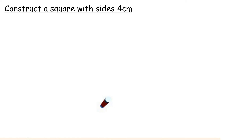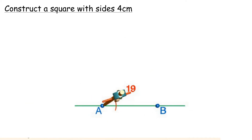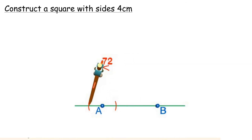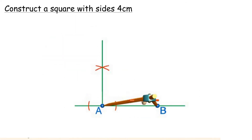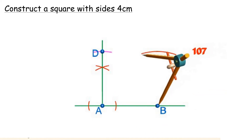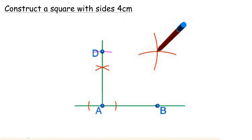Construct a square with sides of 4 cm. Construct a line segment AB with a length of 4 cm. Construct a perpendicular line. Construct a curve with a distance of 4 cm from point A so that it intersects with the perpendicular line. The intersection point is labeled D. Construct 2 curves with a distance of 4 cm from B and D so that both curves intersect. The intersection point is labeled C.